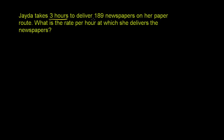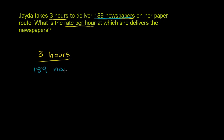Jada takes three hours to deliver 189 newspapers on her paper route. What is the rate per hour at which she delivers the newspapers? The first sentence tells us she takes three hours to deliver 189 newspapers, so we have three hours for every 189 newspapers. But we want to figure out the rate per hour — the newspapers per hour.